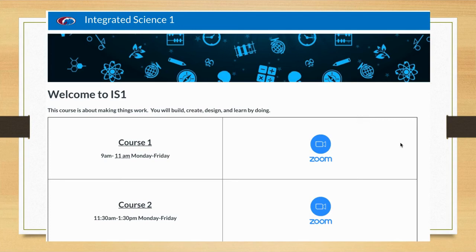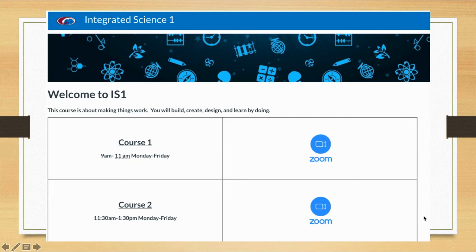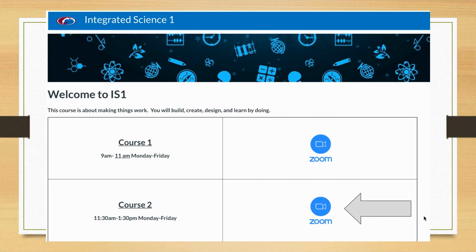When you click on it, it's already set up for either Mr. Sogo or Mrs. Hartford. You simply have to know if you're assigned to course one, starting at 9 a.m., or course two, starting at 11:30. For course one, simply click the icon and it will send you to the correct course one. For course two, click the icon and it will send you to course two.